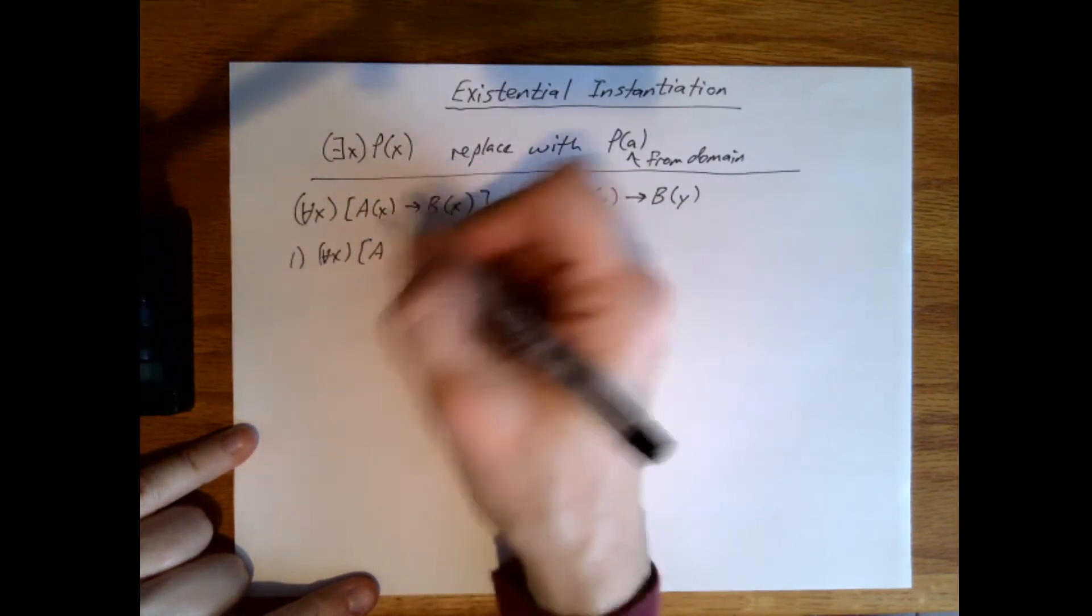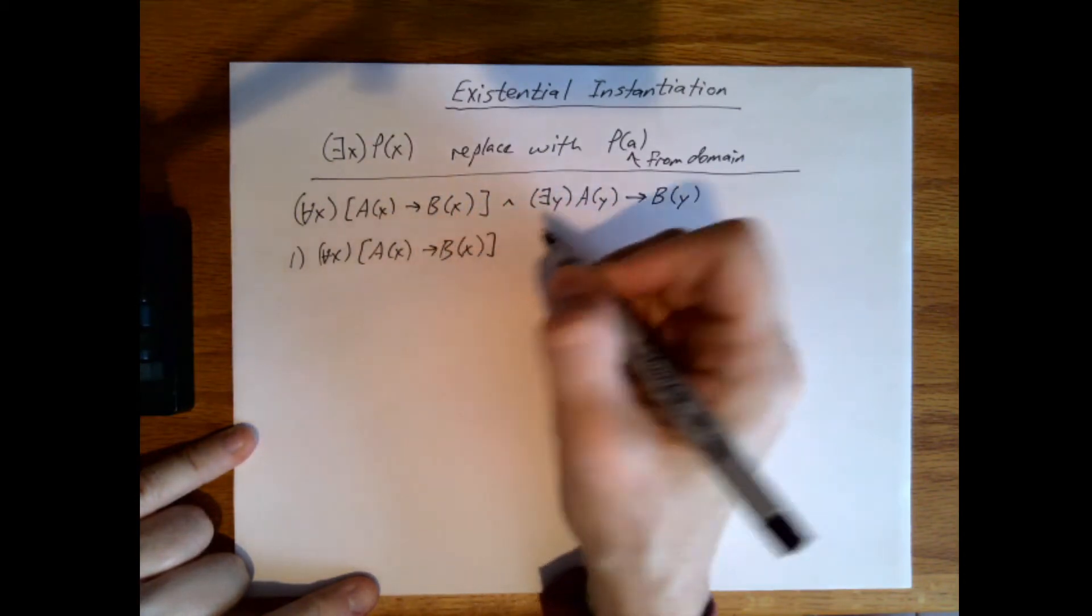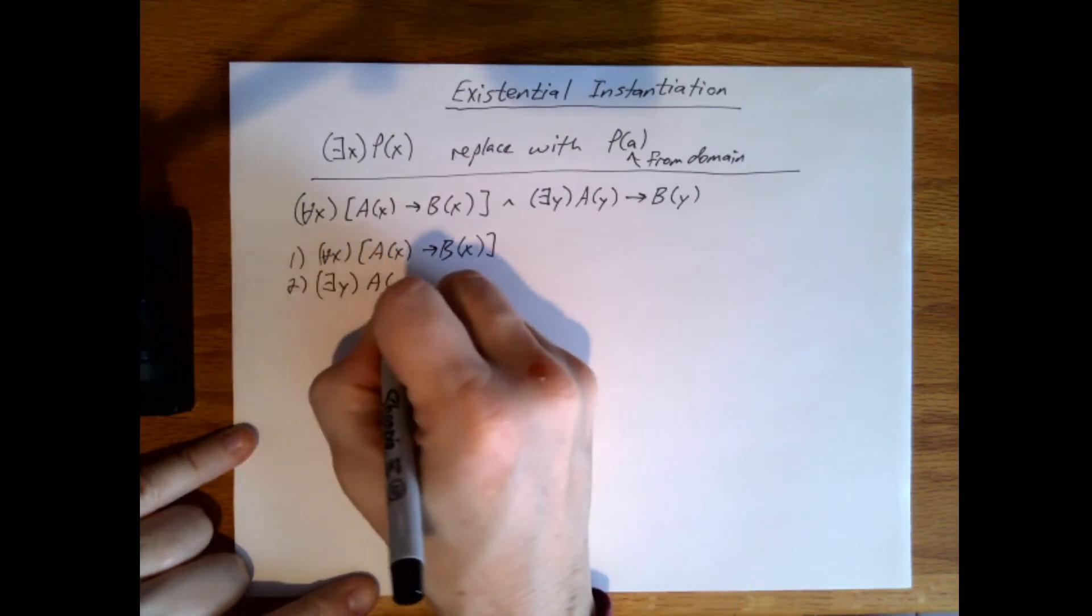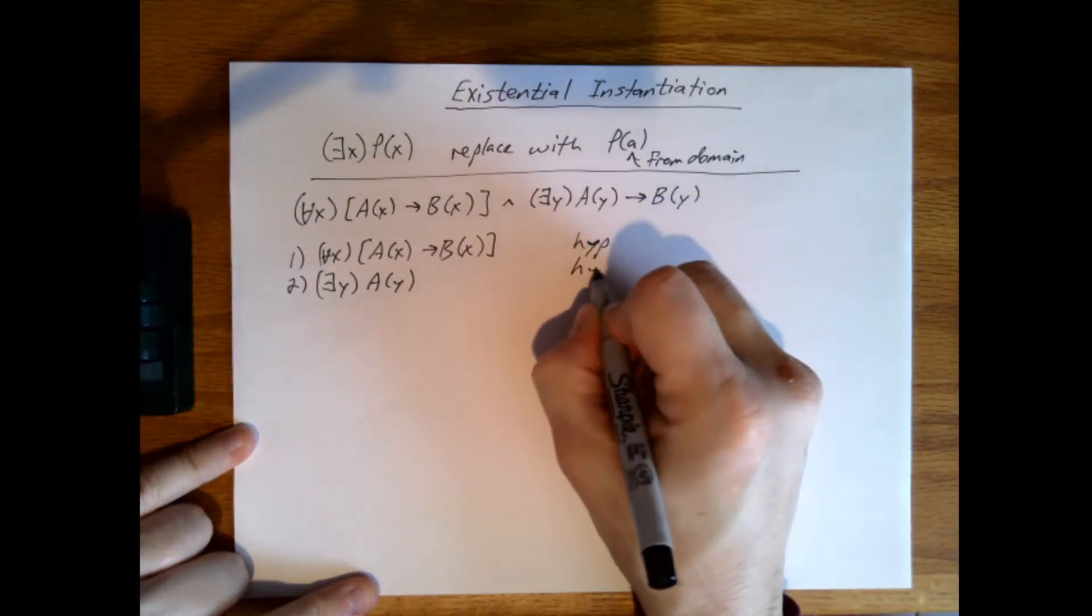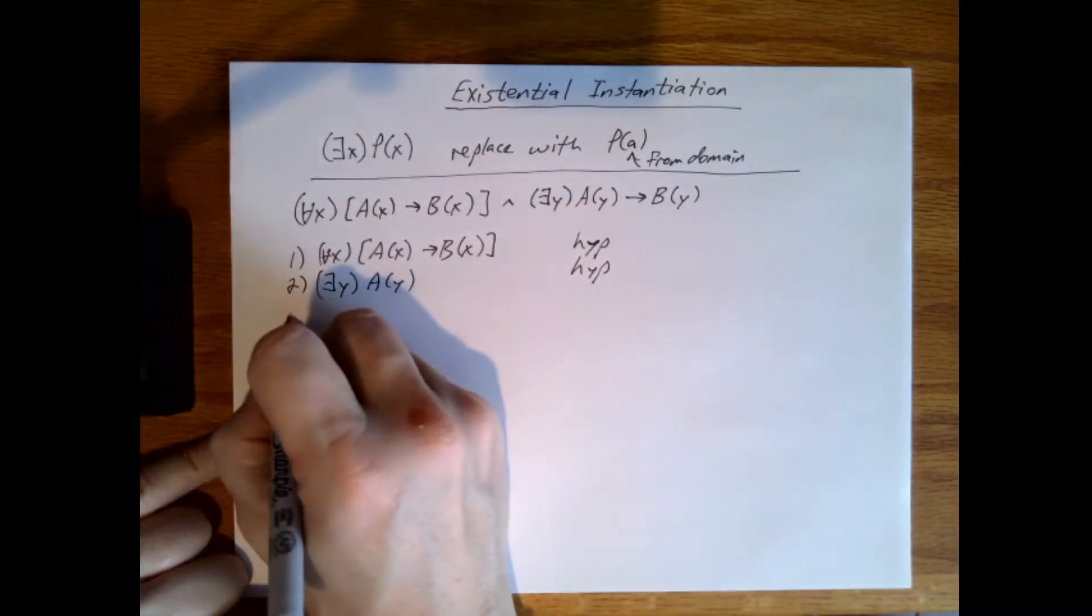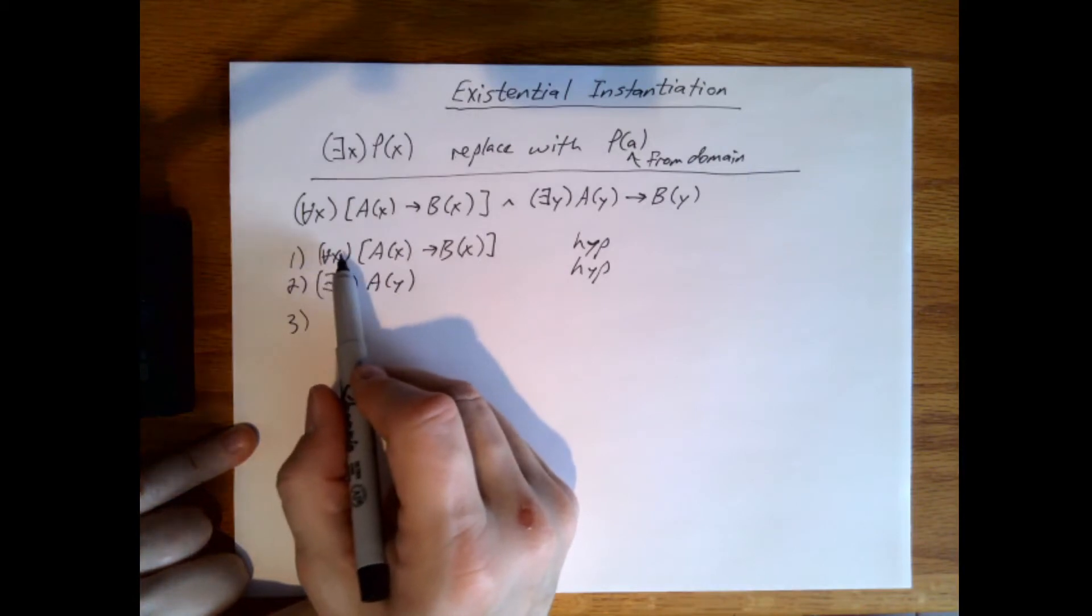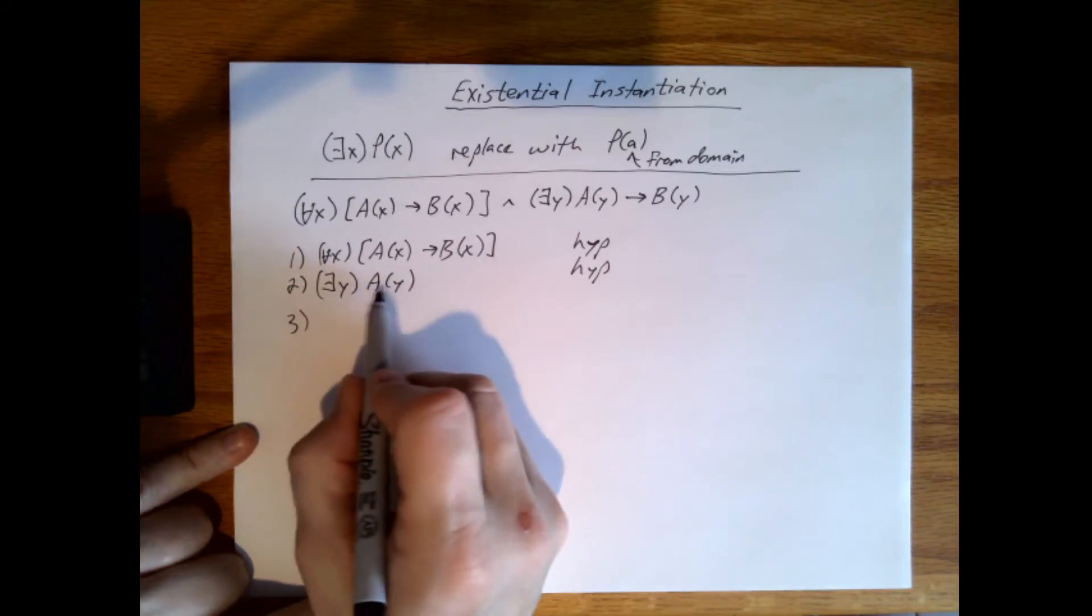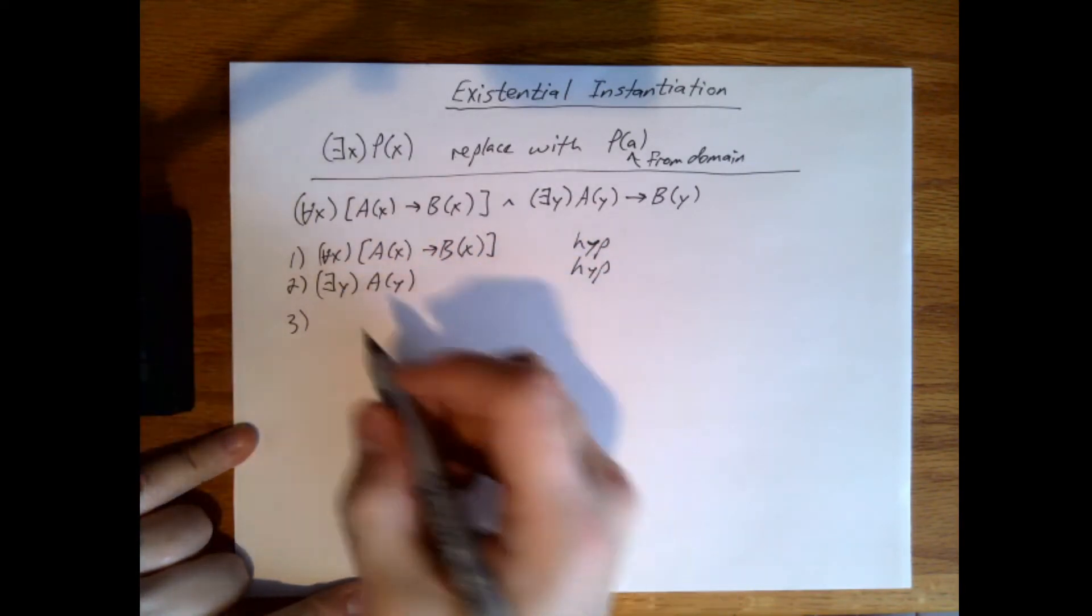Our two hypotheses, the order we write those doesn't matter because we're just rewriting the information that we have to begin with. So hypothesis, hypothesis. I want to strip the universal quantifier and also strip the existential quantifier, but I'm going to do this first. And the reason why, we'll see more details in a moment, but since I'm using these two together, that's the reason why this one has to go first.